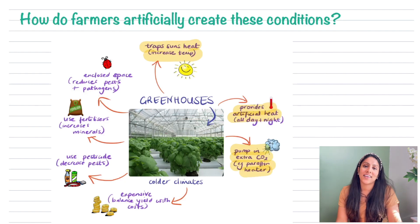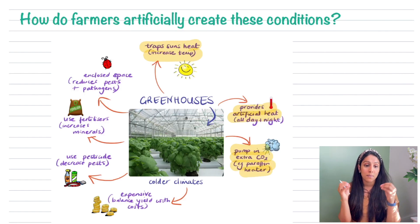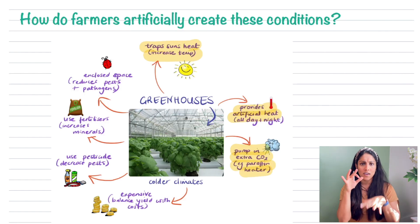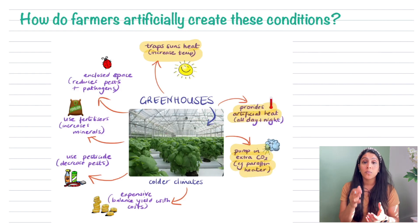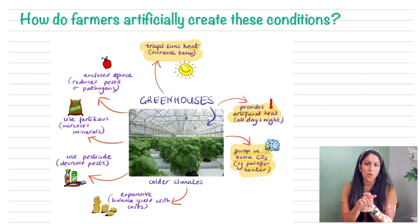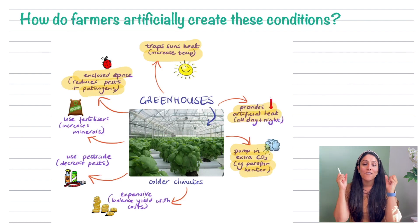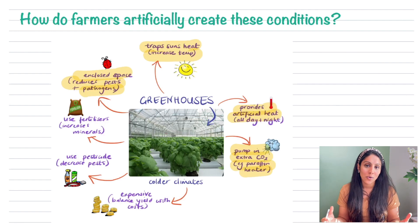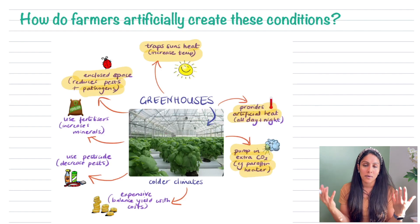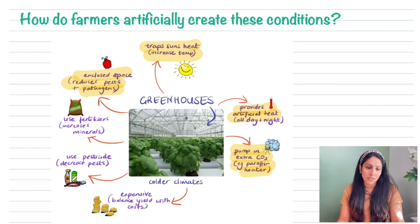Another benefit of greenhouses is that they provide an enclosed space, which reduces pests and pathogens from eating away at crops. A pathogen is any microorganism that can cause disease. Farmers also use fertilisers, which are full of minerals — things like nitrates — that should be plentiful in soil. If they're not, farmers add them through fertilisers to help the plants grow and increase crop yield.